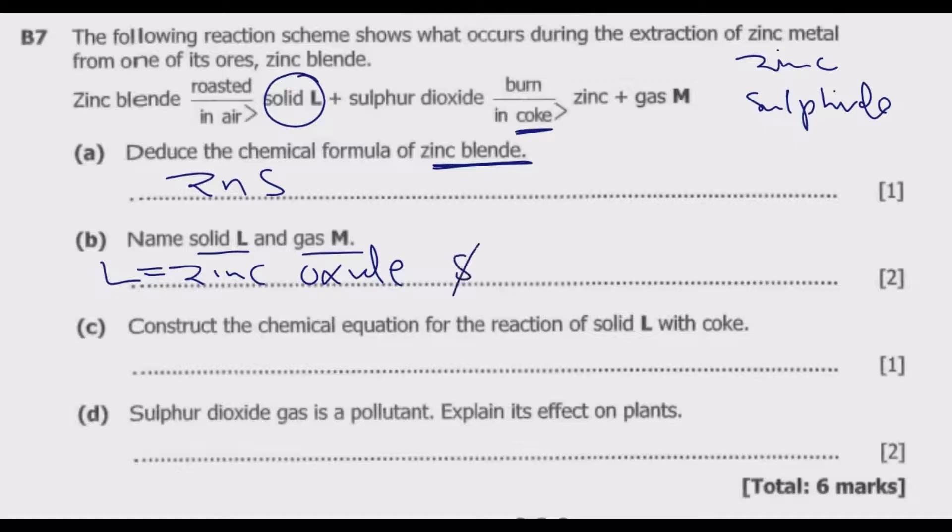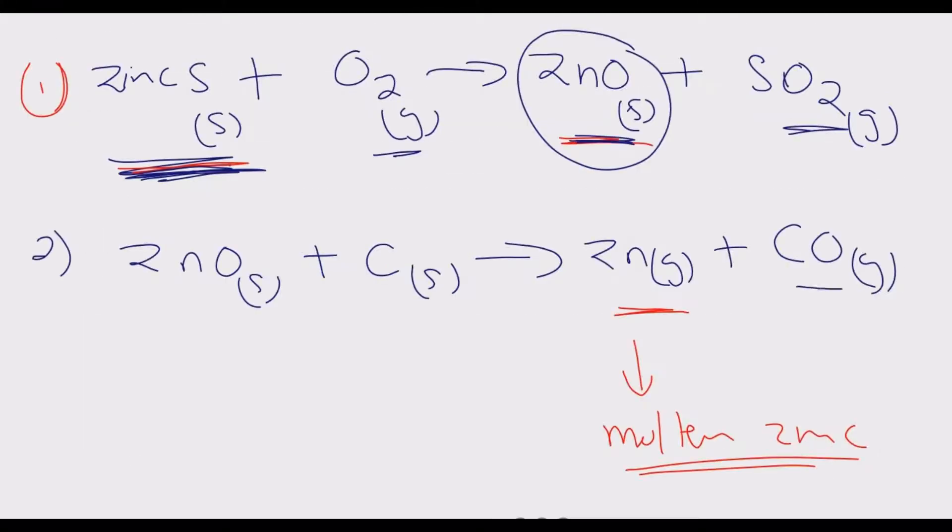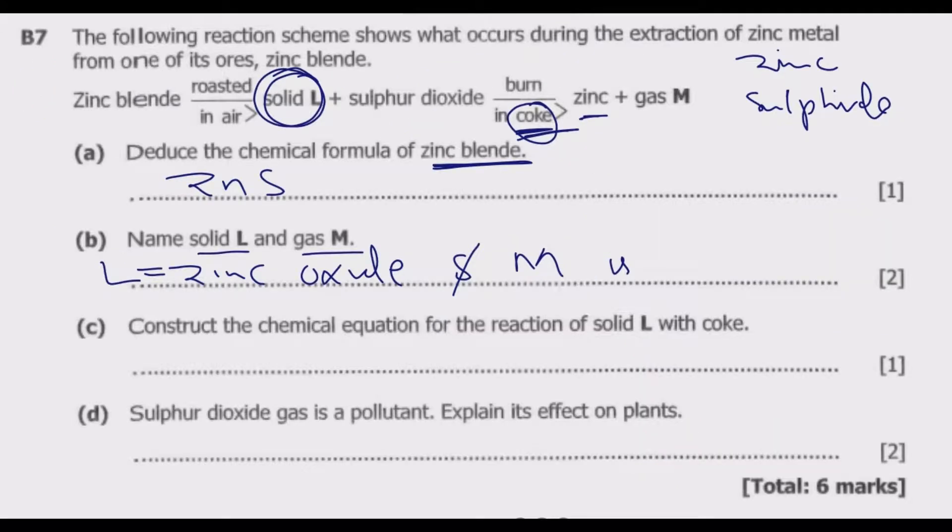And what is M? You see the second equation where we burn this zinc oxide in coke, which is carbon, to give us zinc itself and the gas. So gas M is this gas. Remember we have zinc here, then this is carbon monoxide. So M is carbon monoxide.